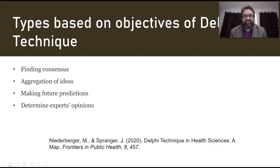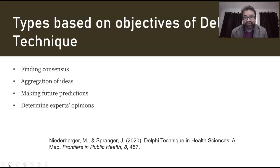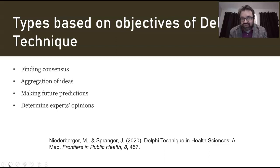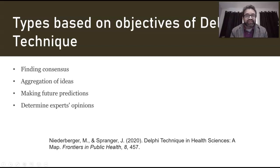Looking at the Niederberger and Spranger article from 2020 — a very helpful article in Frontiers in Public Health, which is open access — the four basic types of objectives based on the technique are: finding consensus, aggregation of ideas, making future predictions, and determining experts' opinions. These are the four broad types of objectives.